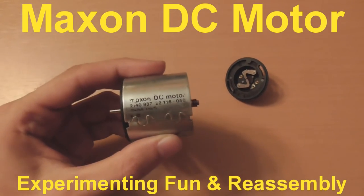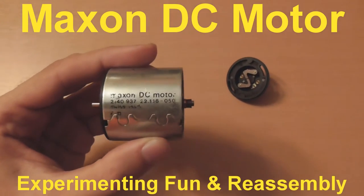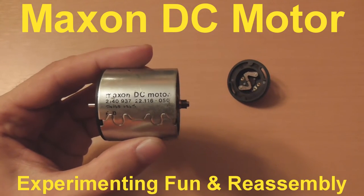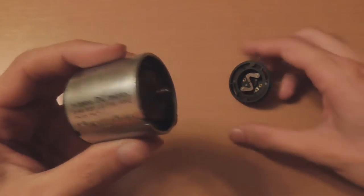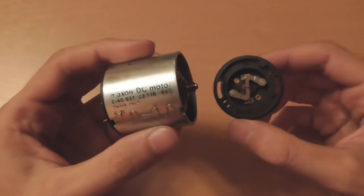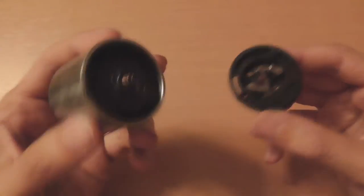Hey guys, I've got an interesting treat here for you today. It's a Maxon 2140.937 DC motor that was being discarded by my workplace in this disassembled condition. So what I'd like to do is talk about it a bit, show you some cool things with it, reassemble it and show you how it works.